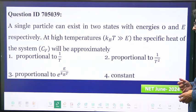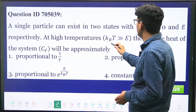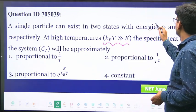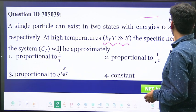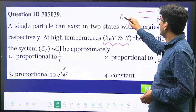In this question you see the temperature is high, and there are two states: one state is zero and another state is E, and they want to ask about Cv.